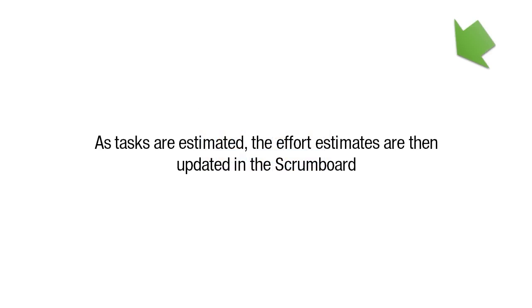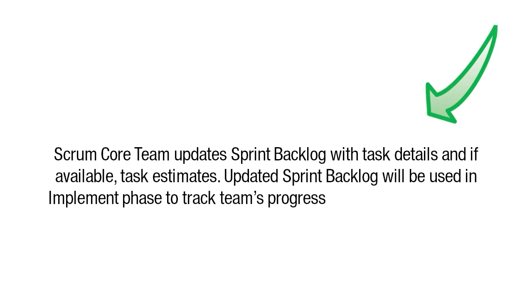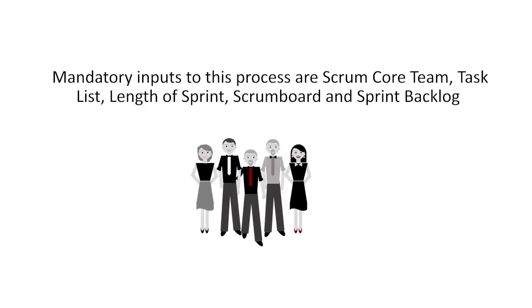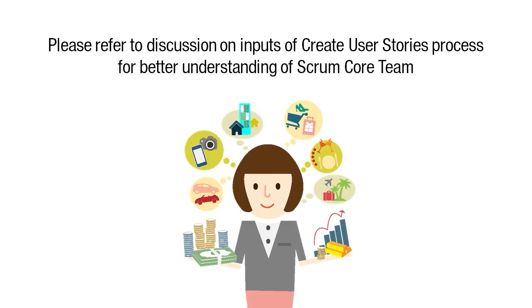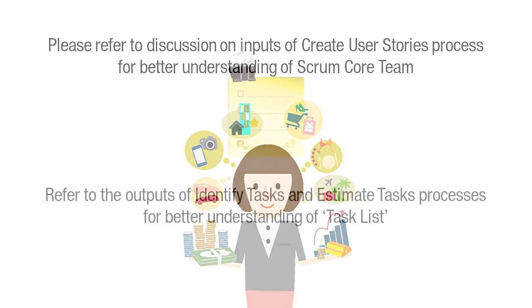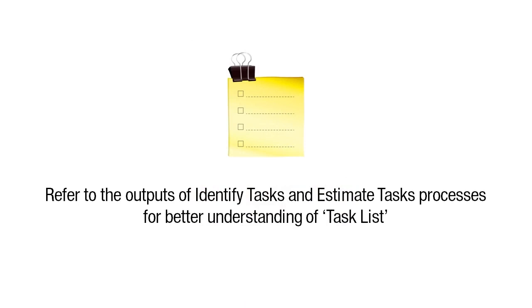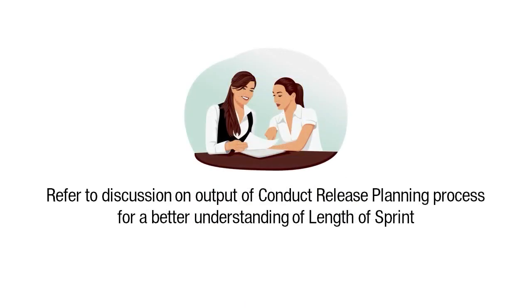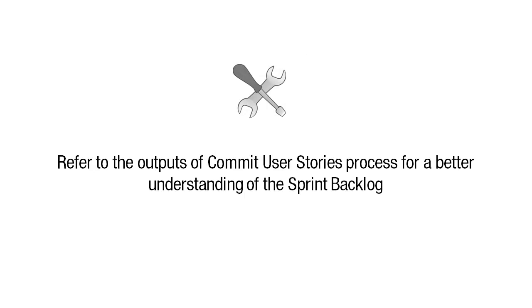Let us conclude by discussing the Update Sprint Backlog process. In this process, the Scrum Core Team updates the sprint backlog with task details and, if available, task estimates. The updated sprint backlog will be used in the Implement Phase to track the team's progress during the sprint. The mandatory inputs are: Scrum Core Team, Task List, Length of Sprint, Scrum Board, and Sprint Backlog. The mandatory tool is Sprint Planning Meeting, during which user stories are committed and tasks are identified and estimated.